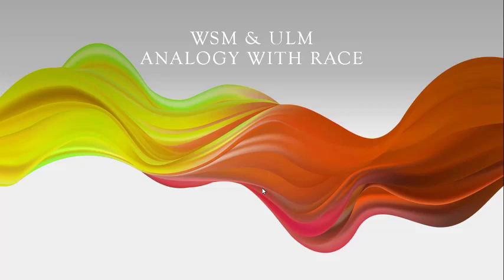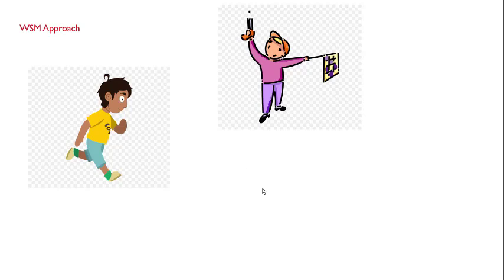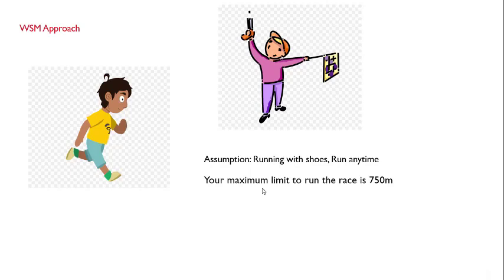With a race example: you came to me and said you want to participate in a race. By looking at you I made certain assumptions — that you always run with shoes and you can run anytime — and accordingly I decided that the maximum limit up to which you can run in a race is 750 meters. So the ultimate strength with respect to the race is 750 meters.